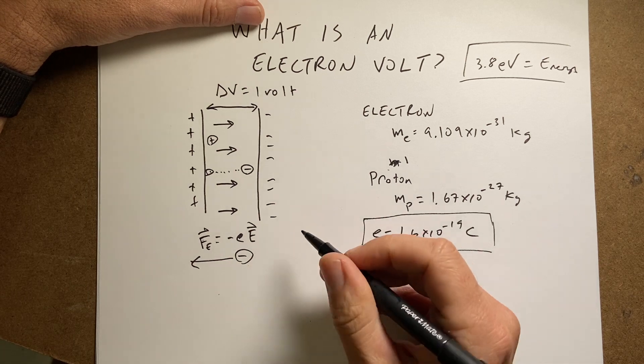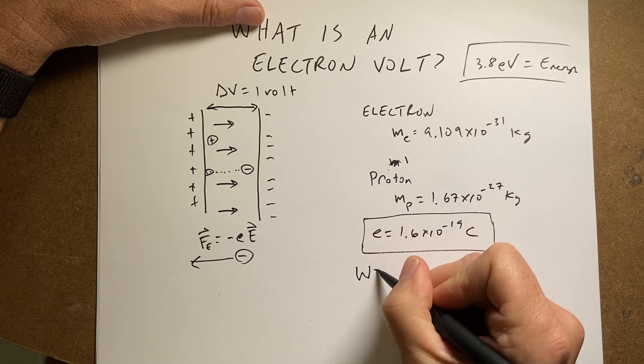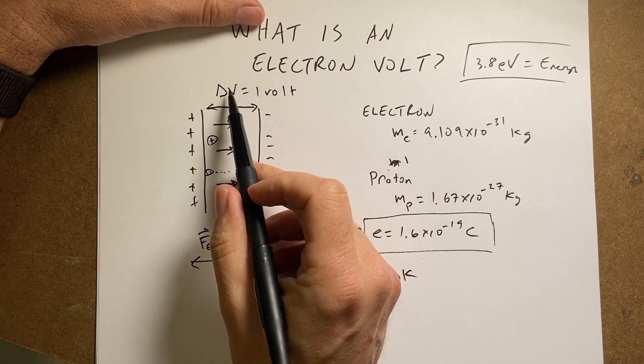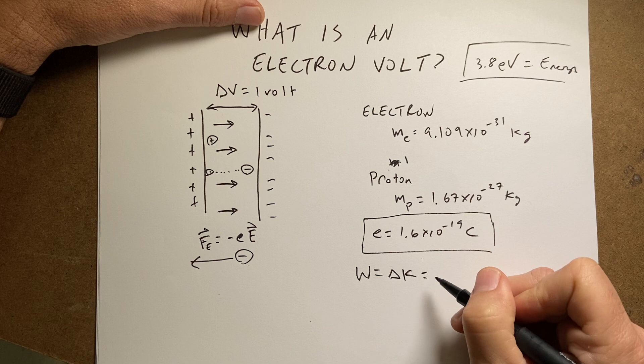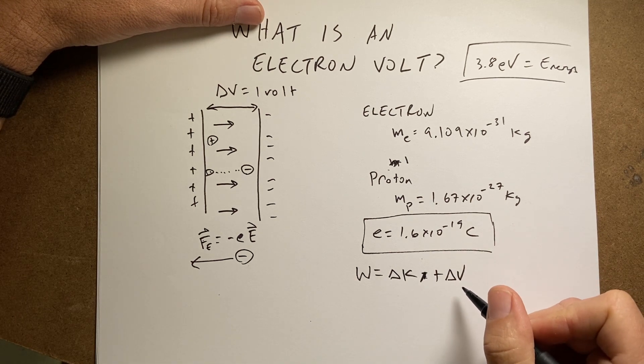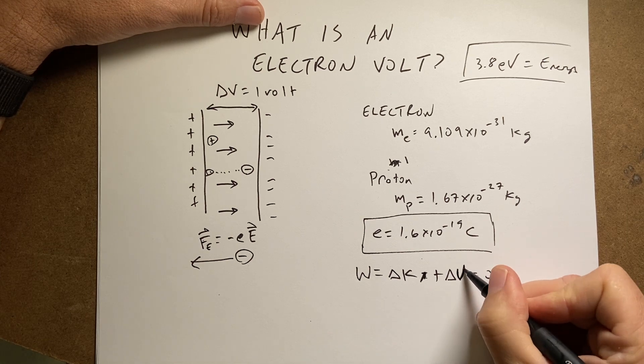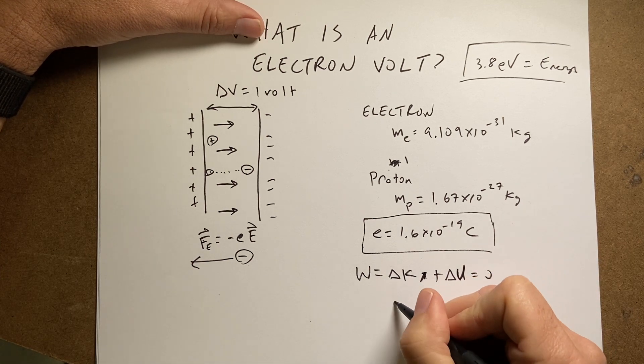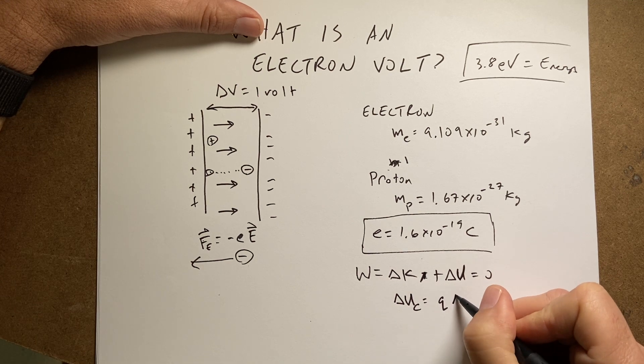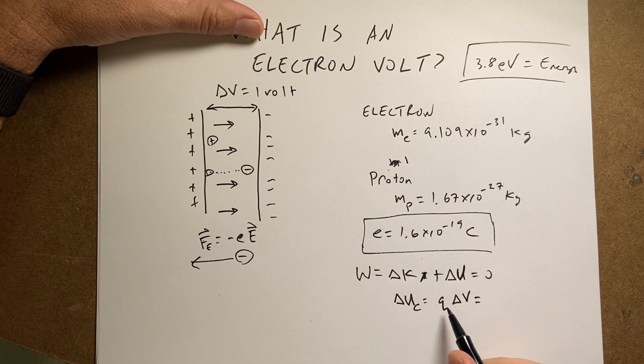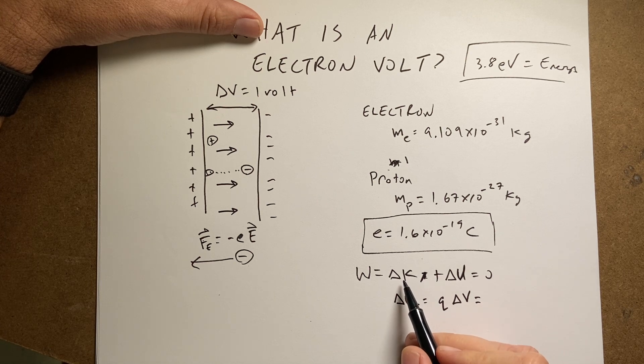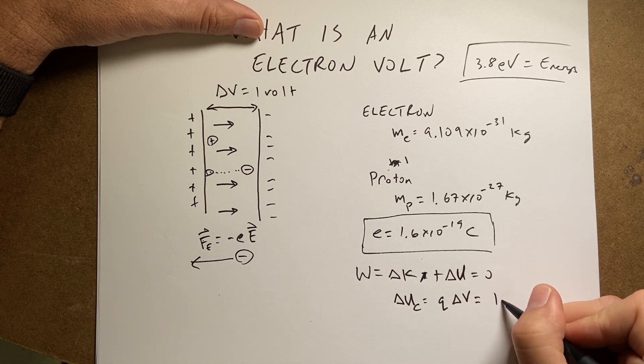But I could also think of this in terms of the work energy, and I could say work is a change in kinetic energy. So if there's a one volt change of potential, that would be equal to, I'm sorry, plus the change in potential. And that's zero. Potential energy. Remember the change of potential energy for electric is the charge times the change in potential. Okay, so now I have one volt and one electron. And so the change in energy is going to be the change in kinetic energy, and this is 1 eV.